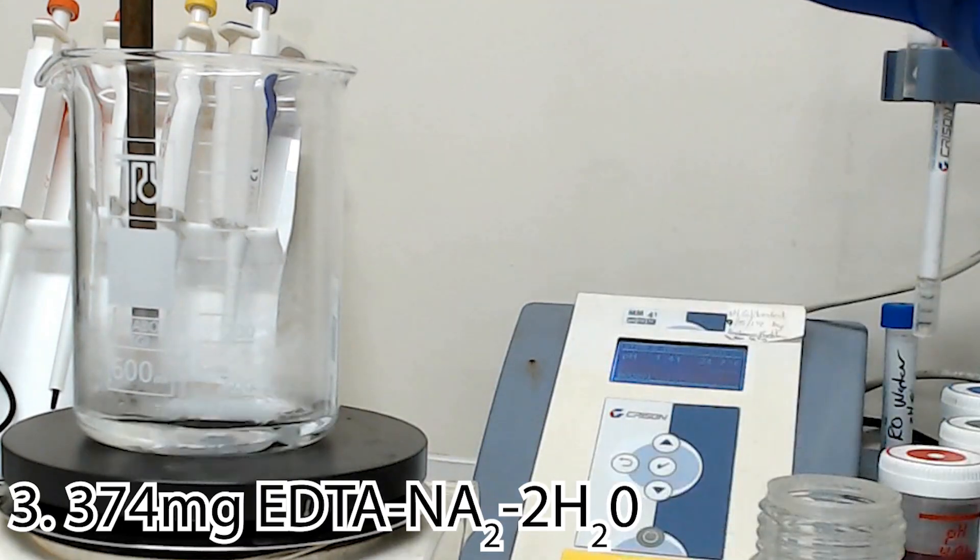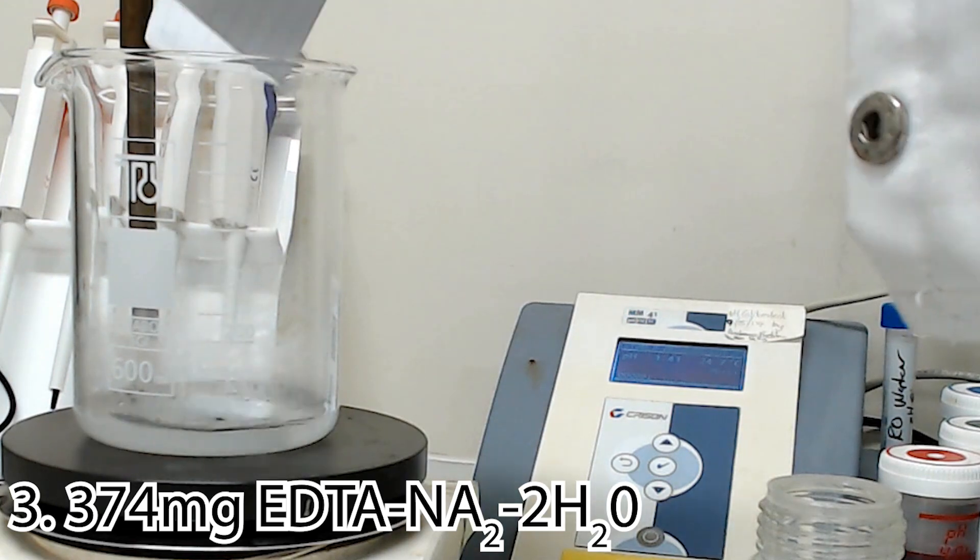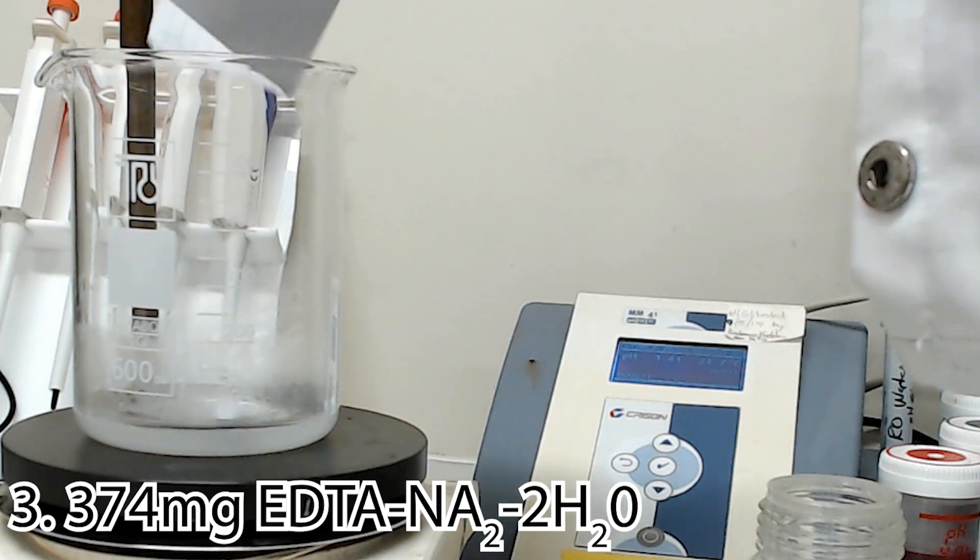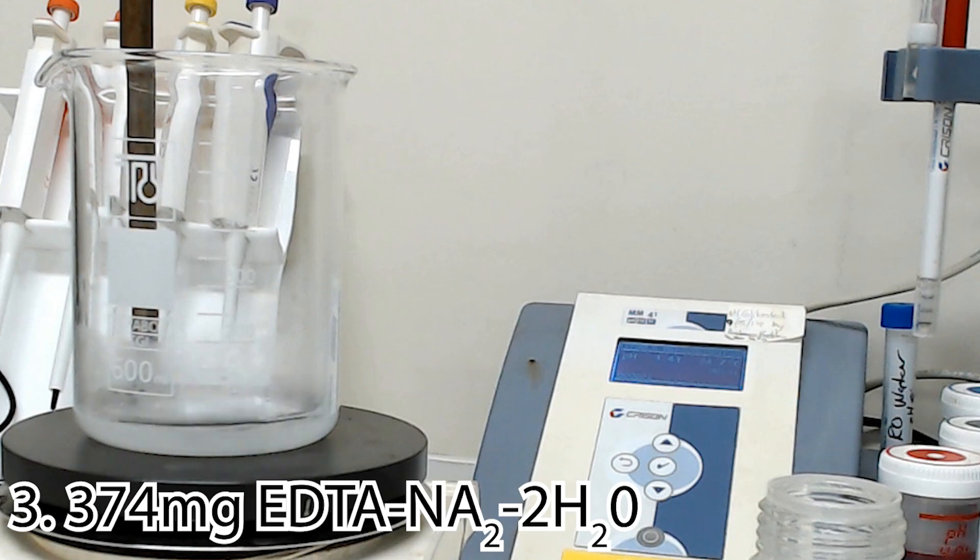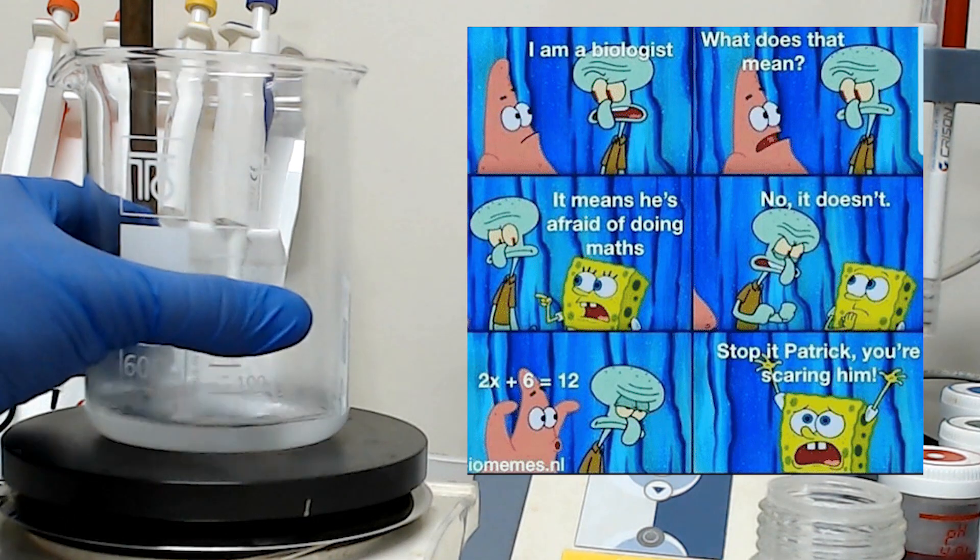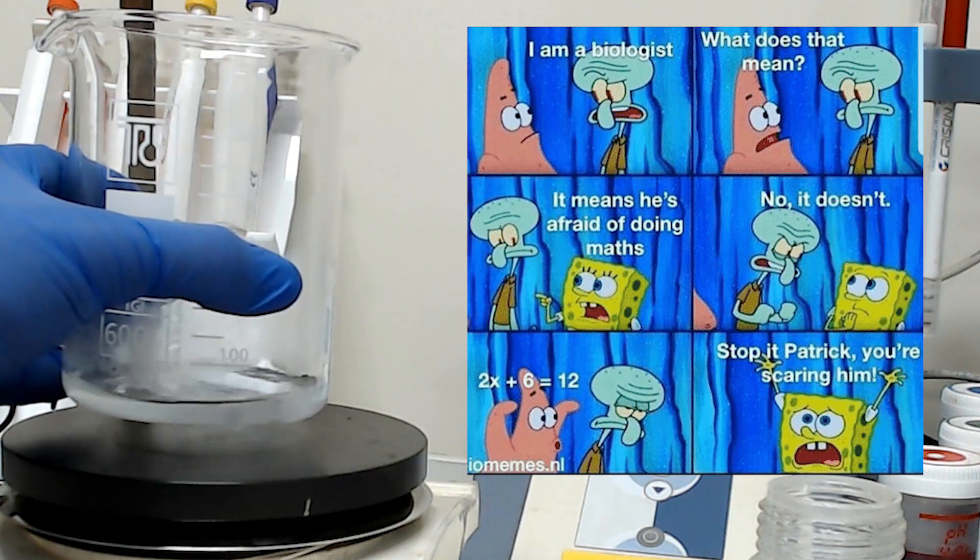Next, we will add 374 milligrams of our EDTA crystals. Note, you might have a differently hydrated form of EDTA such as tetrahydrate. This should still work. Just chuck the new molecular mass into your molarity calculator and figure out the mass for a 10 millimolar solution. Simple, right?